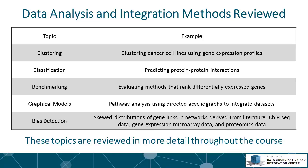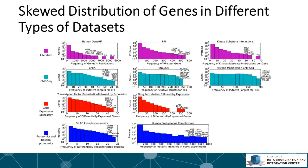One thing not yet discussed in the course is skewed biases in the representation of genes. In one of the reviews we show that different types of data have different types of biases in which genes are more commonly represented. For example, in literature-based data the most well-studied genes like P53 have many references, citations, and connections. Different genes are very commonly identified when we apply ChIP-Seq methods, and the same is true with gene expression data or proteomics.